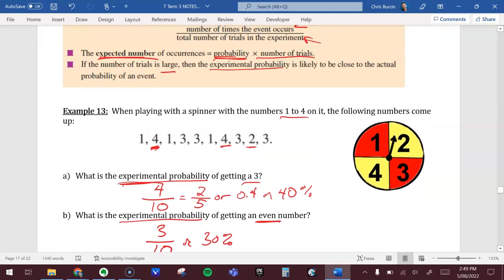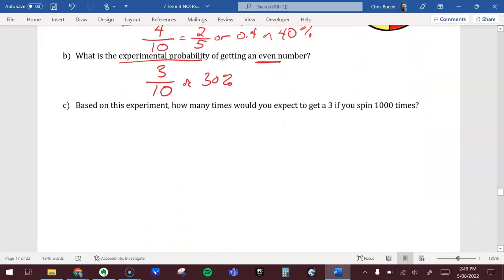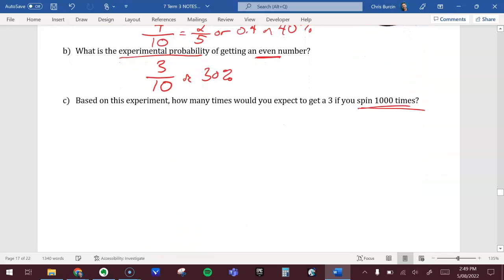If you want to get the expected number, you might have more than ten trials. What if we spun it a thousand times? To save us actually spinning it a thousand times, let's look at how likely we would be to get a three if we spun it a thousand times.